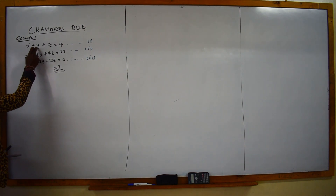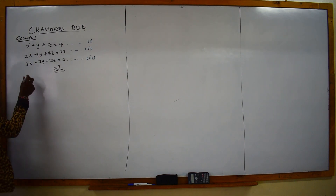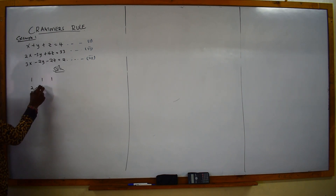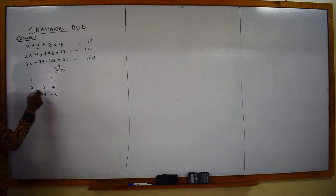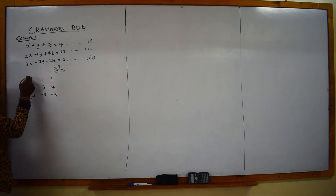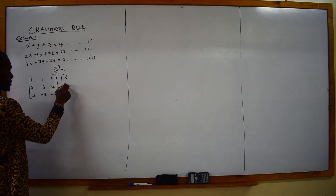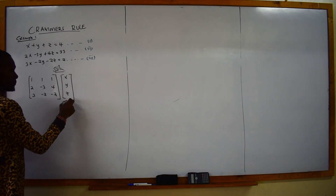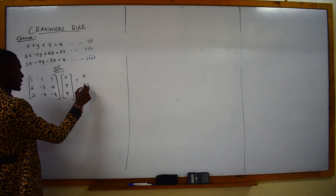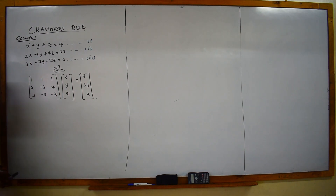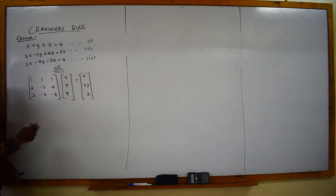When you have three equations of three unknowns, the first thing you do is extract the constants and write them in matrix form. So we have 1, 1, 1 in the first row; then 2, negative 3, and 4; then 3, negative 2, negative 2. Then our values on the right-hand side: x, y, z are given by 4, 33, and 2. In matrix form, these three equations can be written in this form.